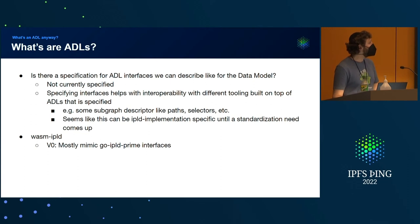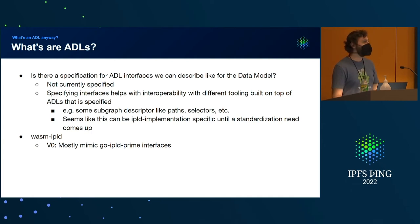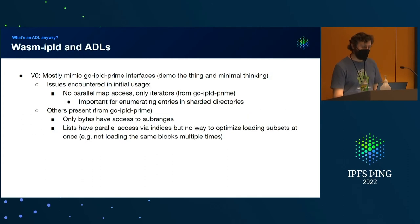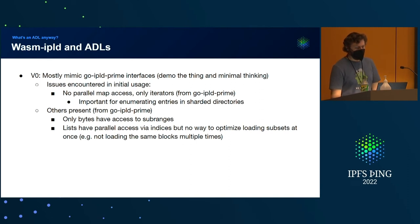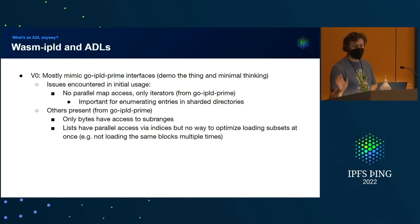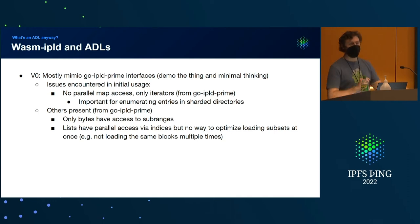What did I do for my IPLD implementation? Only so many hours in the day. I was like, hey, we have interfaces — what if I just copied them and saw where that took me? Turned out it didn't take very long in the scheme of things — mostly me learning Rust and fighting with the borrow checker. The main issues I encountered were: no parallel map access, only iterators. You couldn't get parallel map access, which means I can't enumerate all the entries in a sharded directory in parallel. This seems fixable.